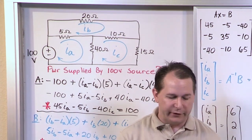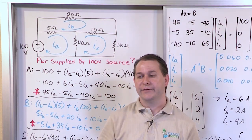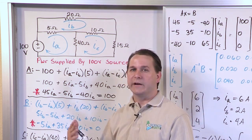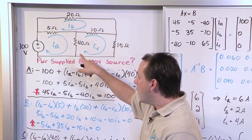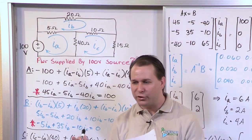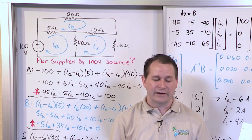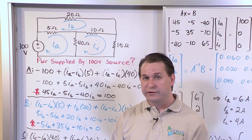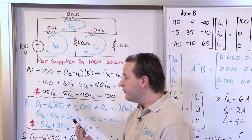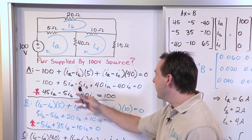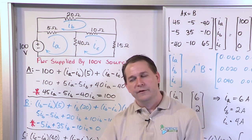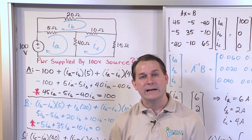That is the second problem in our mesh current series. I highly recommend you go back and work this problem again to make sure you're getting the sign conventions correctly. As you walk around a mesh, ensure you have a positive voltage drop by ordering the current subtraction properly — for example, IA minus IB so current flows in the correct direction. Once you write the equations, the method is very linear with no division anywhere. Practice this one, then follow along to the next section for more mesh current circuit analysis problems.